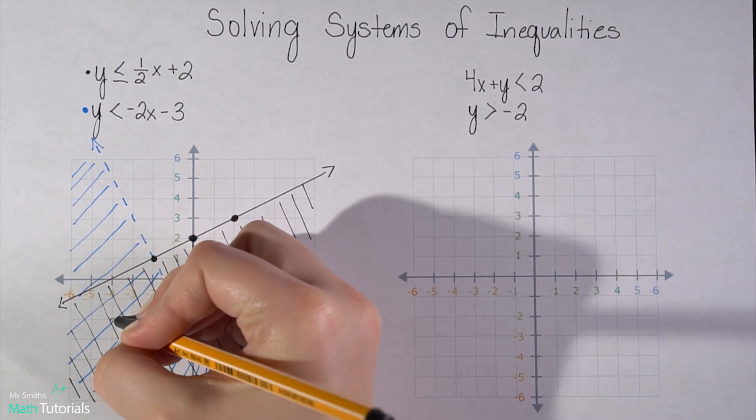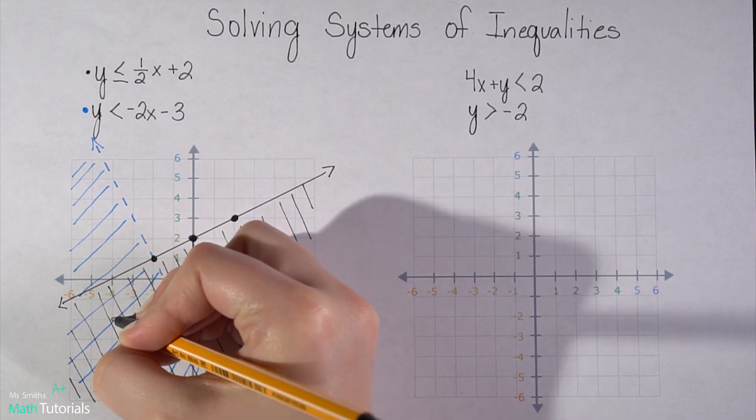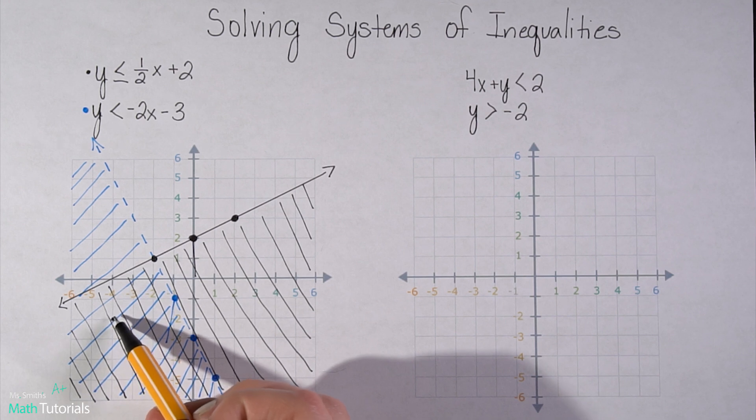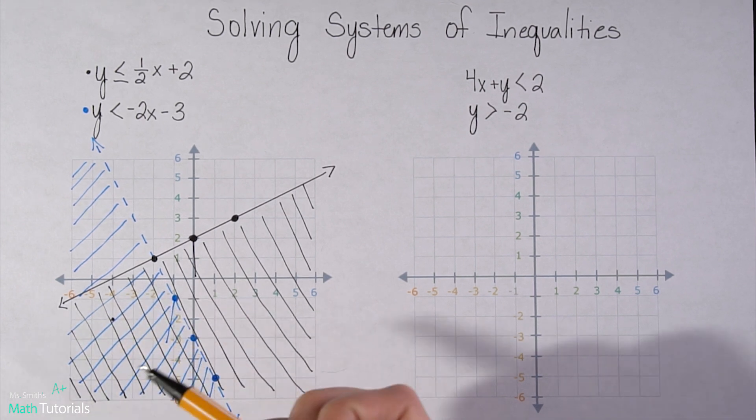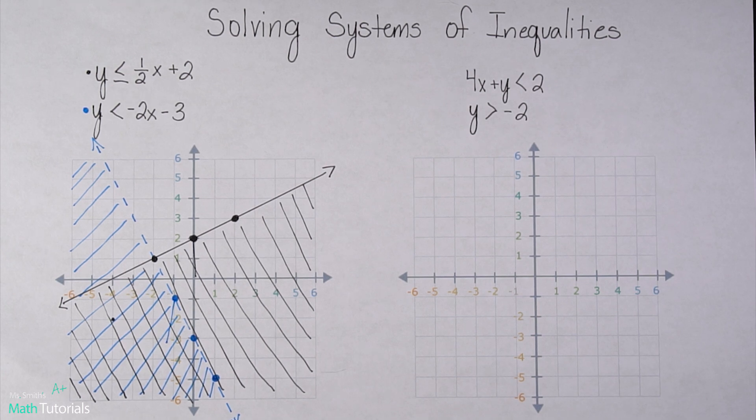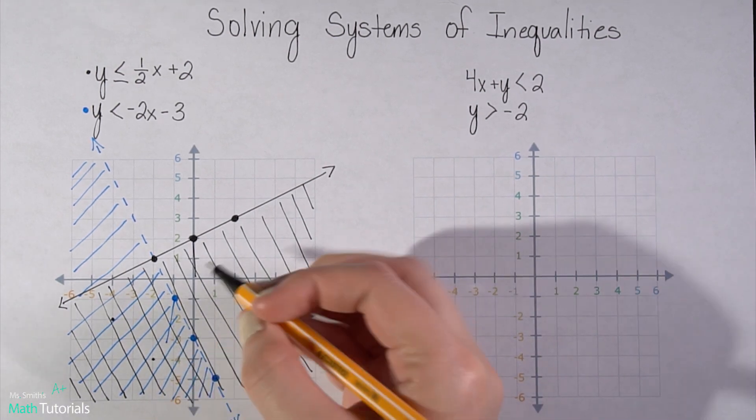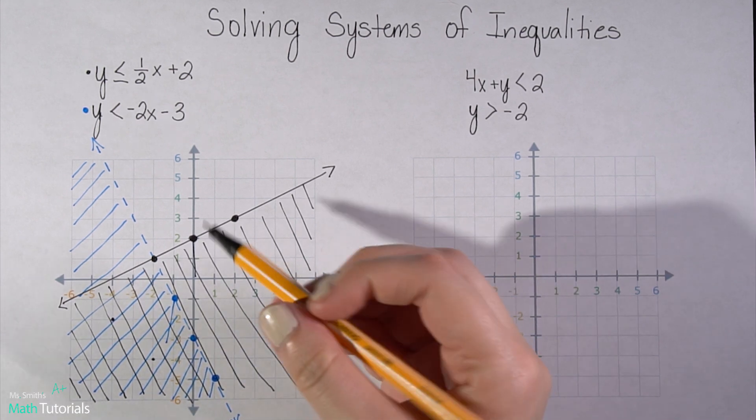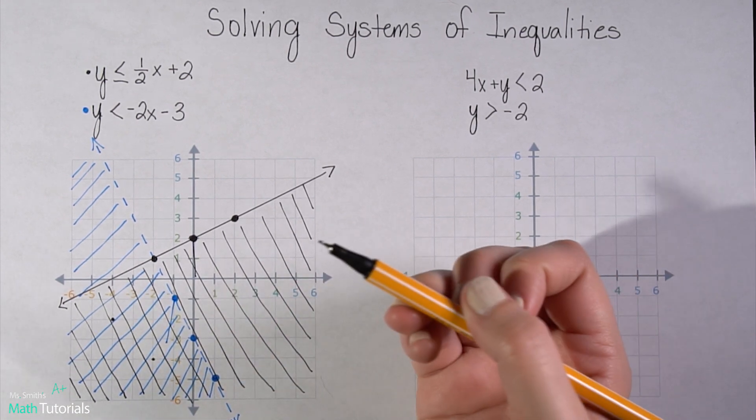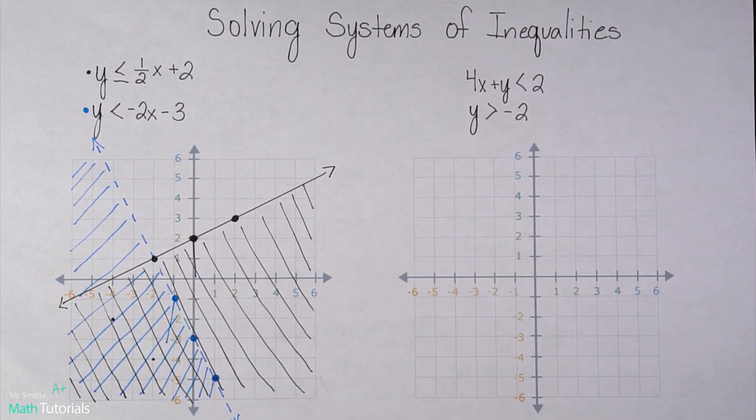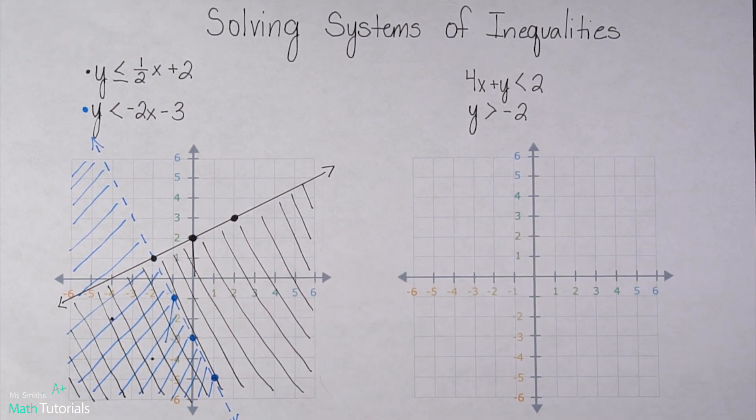So for example, I could pick this point right here. Alright, that's negative four, negative two, because it falls within the shaded region, that would be a true statement for those inequalities. I could pick a different point. I could do this one, negative two, negative four. It doesn't matter, as long as it falls within that shaded region, it would be a solution to those two inequalities.